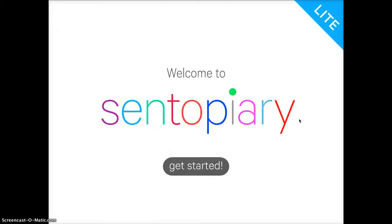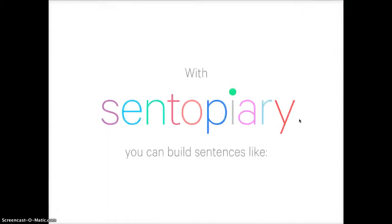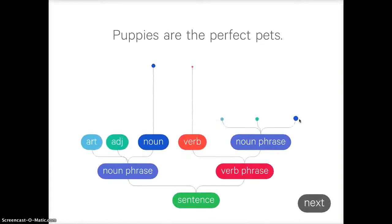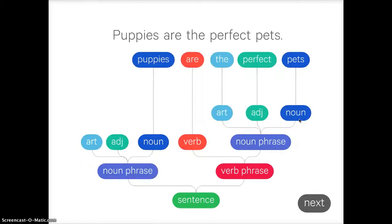Syntopiary Lite is a really nice app to use with students, especially if they're starting to learn parts of speech and sentence diagramming. I'm going to tap 'Get Started' and 'Next' and it will give you a brief demonstration of what you can do with this app. This is the Lite version so you don't get all the parts of speech, but you can get some of the basic ones which will help with your younger students, and if it's an app they enjoy you can always purchase the full app.